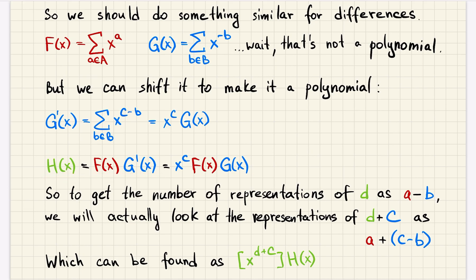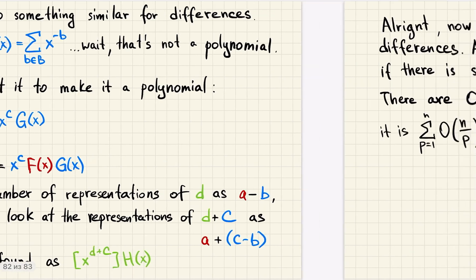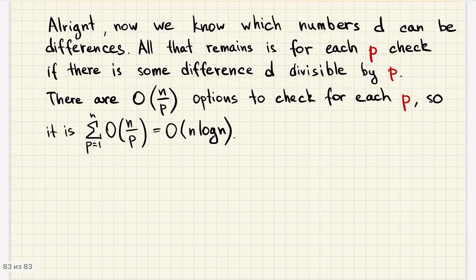And so that number of representations is a coefficient before x to the power of d plus c in polynomial h. So that's what we want to calculate. Now we know for which numbers d we can find a pair of v and k that are on that exact distance.